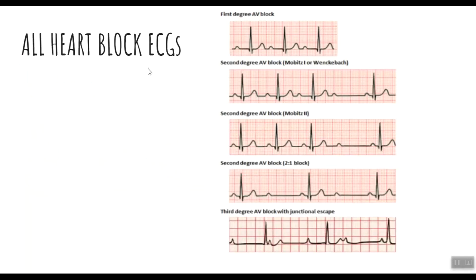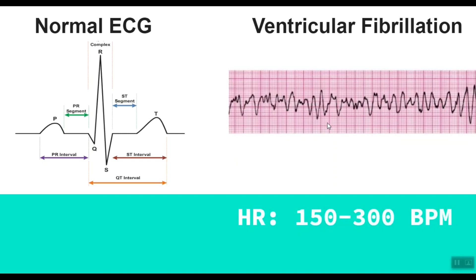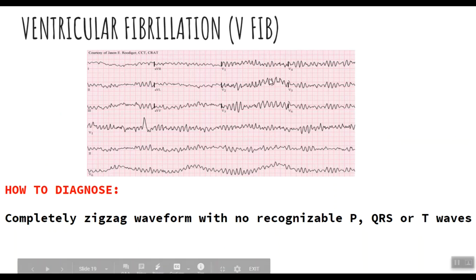This is our last super important ECG and the worst kind of arrhythmia you can possibly have: ventricular fibrillation. You can clearly see there are no distinct P-waves, QRS complexes, or T-waves — the waveform is completely chaotic with no recognizable pattern. The usual heart rate during ventricular fibrillation can reach up to 300 beats per minute. To diagnose it, look for the characteristic completely erratic waveform with no distinguishable P-waves, QRS complexes, or T-waves.